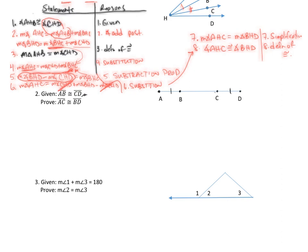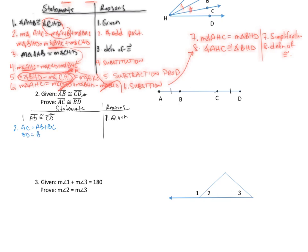Let's look at what we have to prove. We've got to prove something about AC. What can I break AC down into? It's made up of AB plus BC. Let's use that as our second step. So we'll make our T-chart with statements and reasons. Step one: segment AB is congruent to segment CD — given. Step two: AC is made up of AB plus BC, and BD is made up of BC plus CD, by the segment addition postulate.